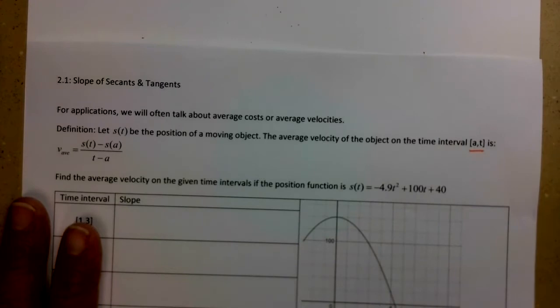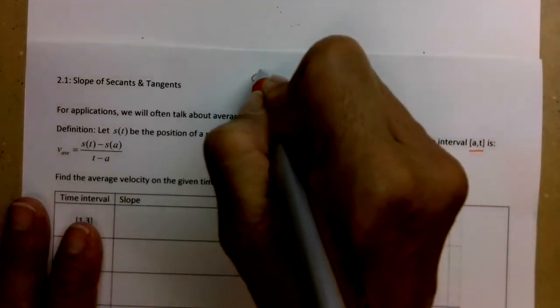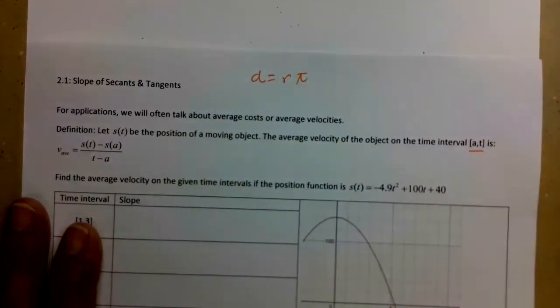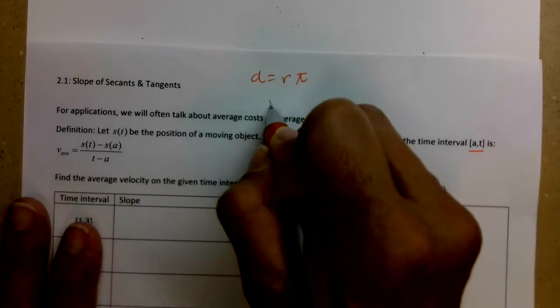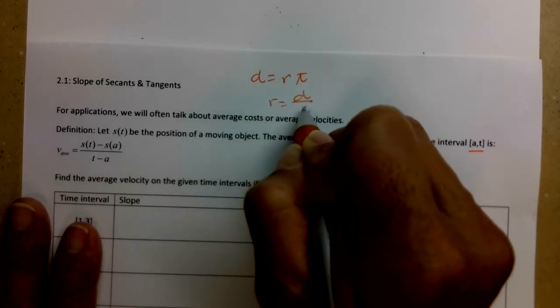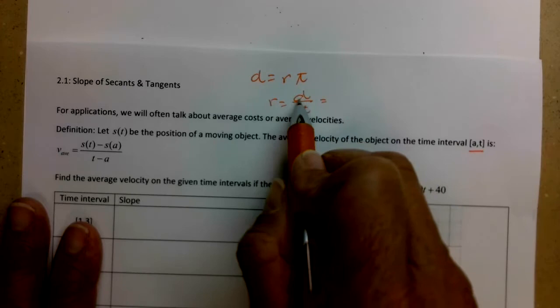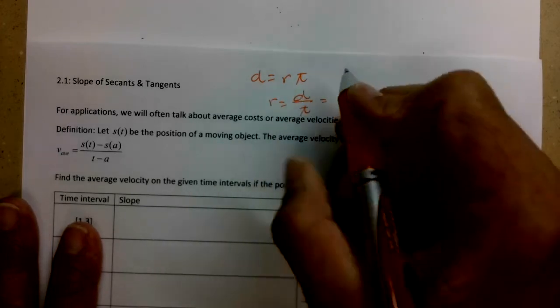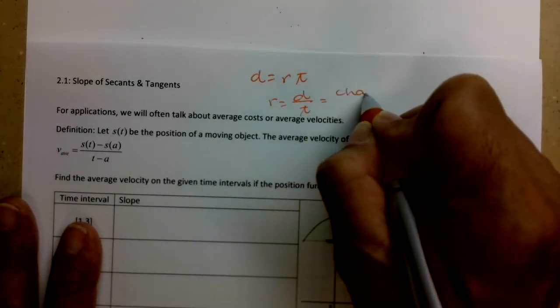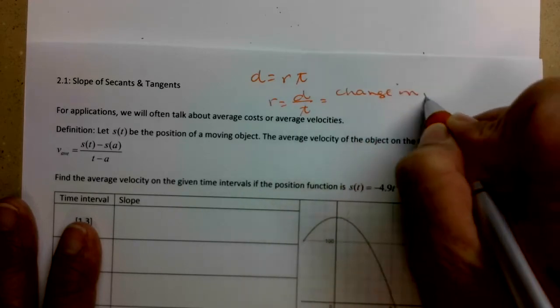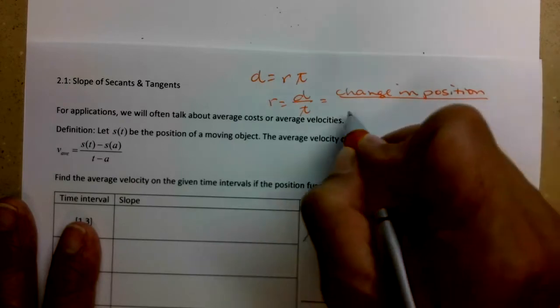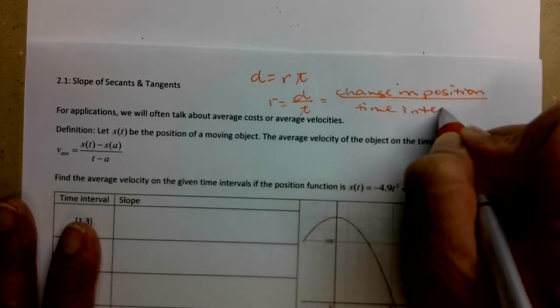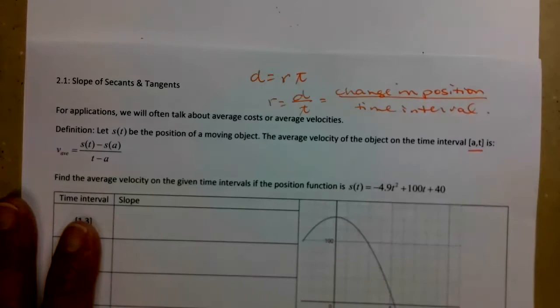So V average is equal to, we do the change in position. So S(T) minus S(A), and then divide it by the change in time. So take a breath. This is just a manipulation. Distance equals rate times time. If you solve that for rate, another name for velocity, rate equals D over T. But now we're just talking about the distance. That's the change in position. So distance is change in position over a given time interval.